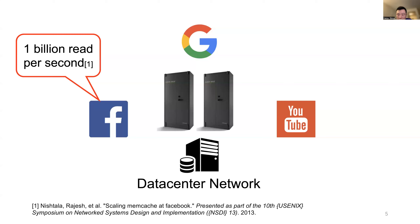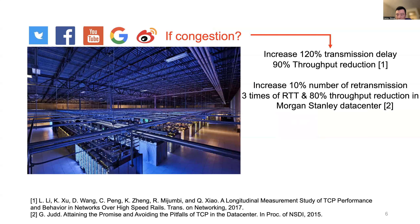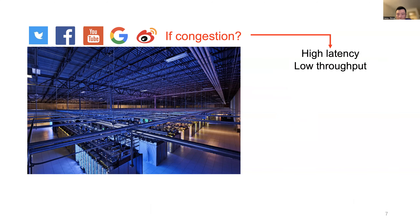In order to learn about the data center congestion control problem globally, we first need to answer one question: what will happen after congestion? Once there is a congestion occurrence in a data center, in Facebook's data center, congestion can increase transmission delay by 120% and cause up to 90% throughput reduction. In Morgan Stanley's data center, it can increase the number of retransmissions by 10% through times of round-trip time for regular data transmission, and cause 80% throughput reduction.